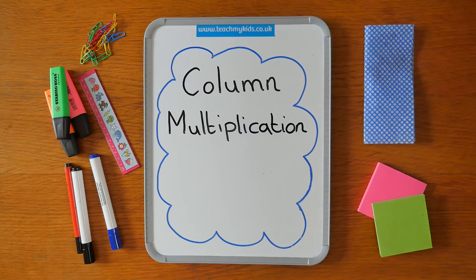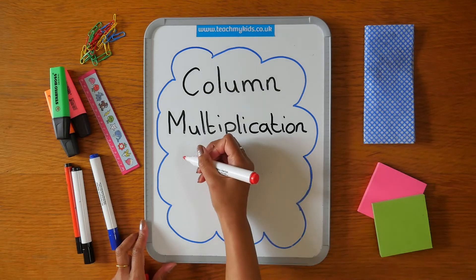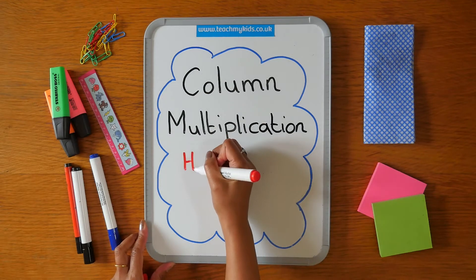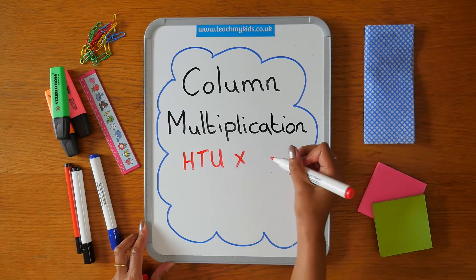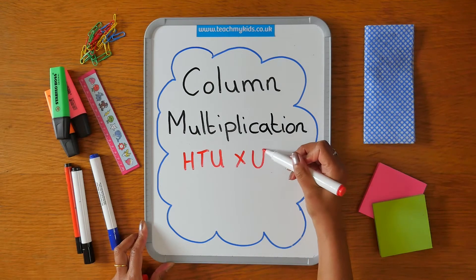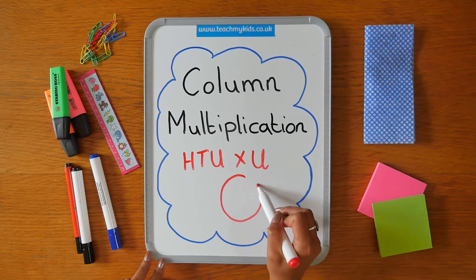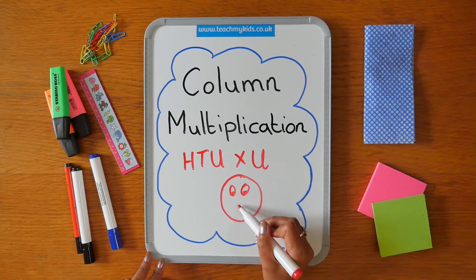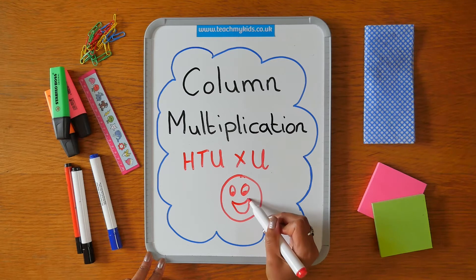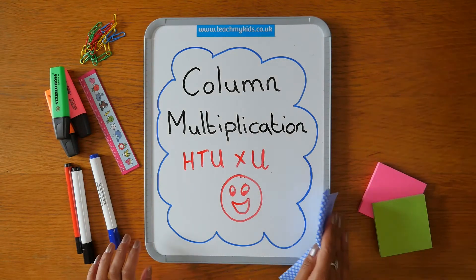Hello and welcome to Teach My Kids Maths. Today we're going to be multiplying using the column method. We'll be using three digit numbers multiplied by a one digit number. I'll work through the sums with you step by step, and remember if you find the video helpful, make sure you like and subscribe below. Let's get started.